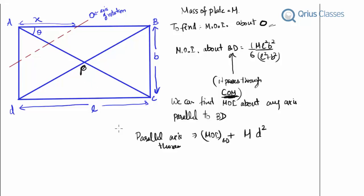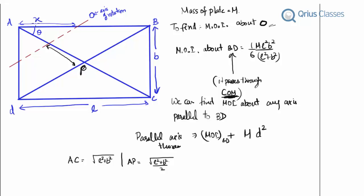All we have to do is find this perpendicular distance — that is our main problem. The length of AC is √(L²+B²), so AP = √(L²+B²)/2. We are given that the intercept on AB is X and the angle is θ.